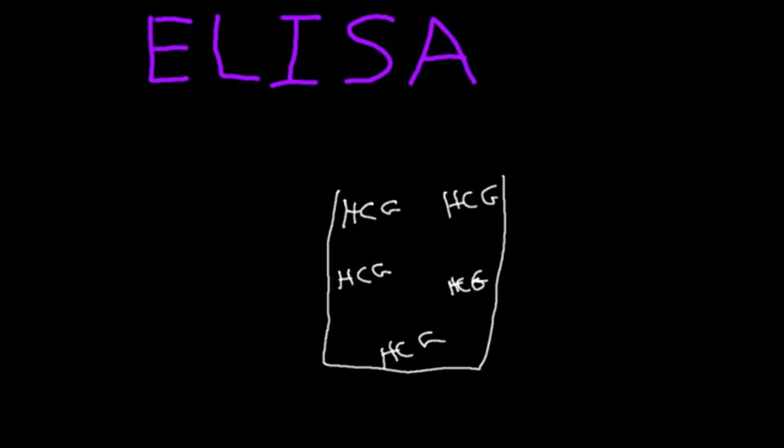Once you've coated your well with HCG, you have to block up the empty spaces with an inert substance. You can use something like albumin.